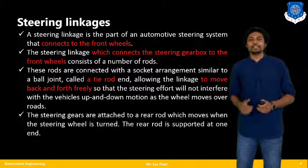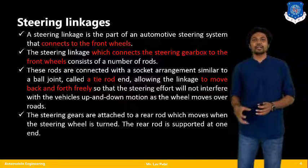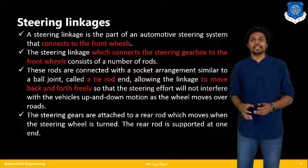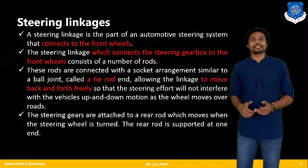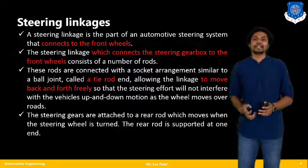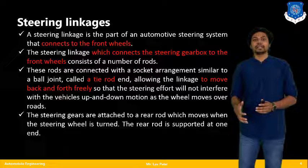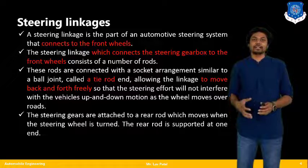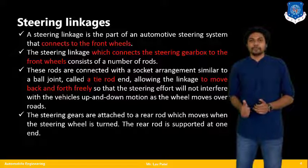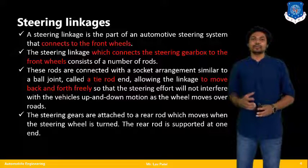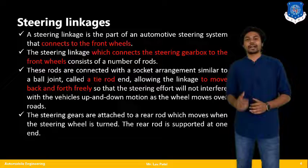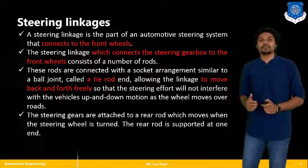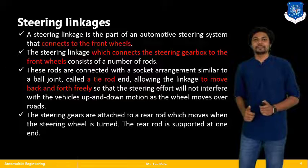The steering wheels are attached to a rear rod which moves when the steering wheel is turned, and the rear rod is supported at one end. We can say there are a number of rods — one or two are flexible links and another are movable links. According to the arrangement or mechanism, we arrive at the final or best suitable steering mechanism.